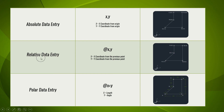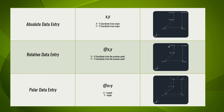The next one is the relative data entry method. In this method, the relative point keeps changing — you have to measure the coordinate from the previous point. For example, from the origin we plot 1,1 to get A, from A we plot another 1,1 to get B, from B we plot 0,1 to get C, and so on. The relative point keeps changing in each situation. Its data entry format is @x,y, where x is the x coordinate from the previous point and y is the y coordinate from the previous point.